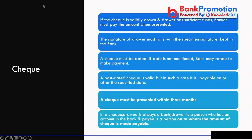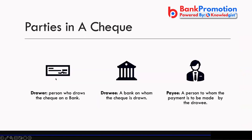When a valid cheque is drawn and the drawer has sufficient funds, the banker must pay the amount when presented. The signature of the drawer must tally. A post-dated cheque is valid but payable only on or after the specified date, which has a validity of 3 months. The drawee in a cheque is always a bank; the drawer is a person who has an account in the bank.